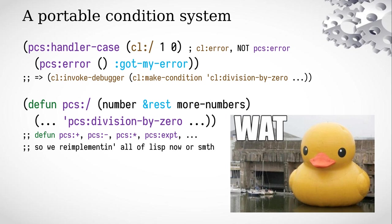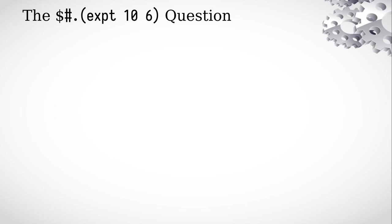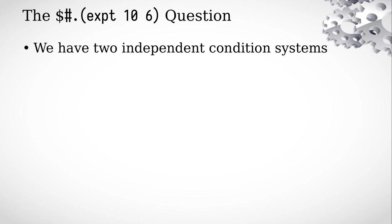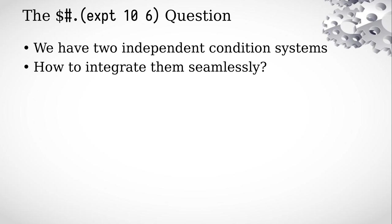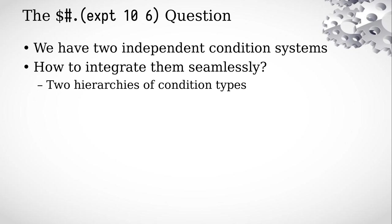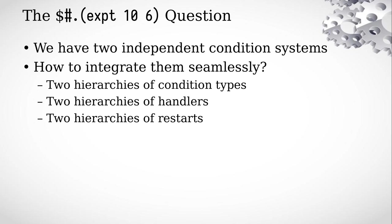Therefore we will leave that approach without pursuing it further. Instead, I will ask the million-dollar question this presentation will attempt to resolve: we have a pair of independent condition systems, the host one and the guest one — how do we integrate them as seamlessly as possible? There are four dualities in total: two hierarchies of condition types, two hierarchies of dynamically-bound handlers, two systems of restarts, and two independent debuggers.